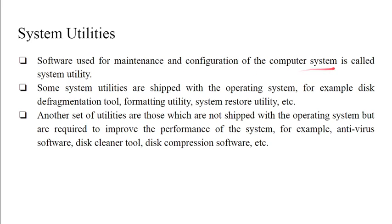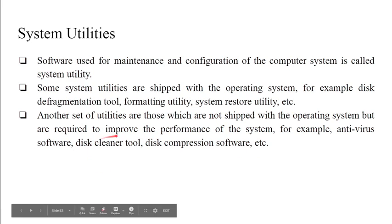Software used for maintenance and configuration of the computer system is called system utility or utility software. Some system utilities are shipped with the operating system, for example disk defragmentation tool, formatting utility, and system restore utility. These tools are available as soon as we install our operating system.